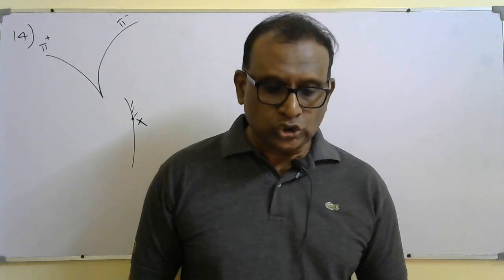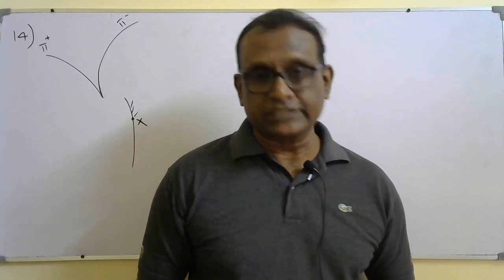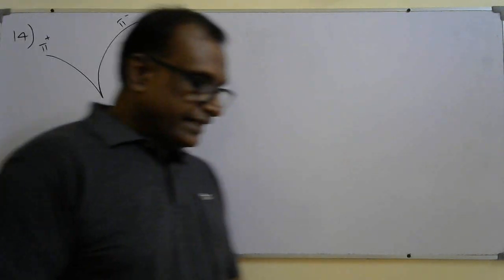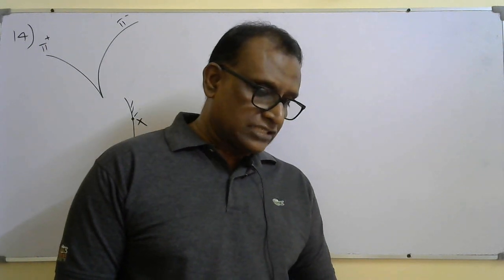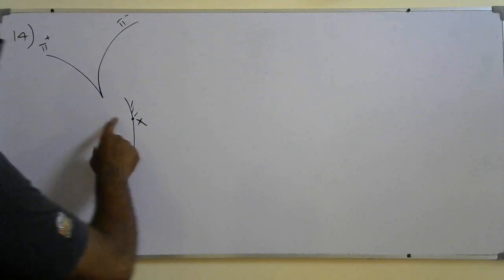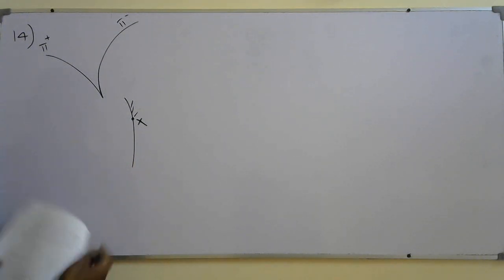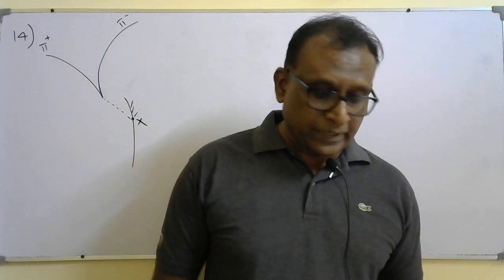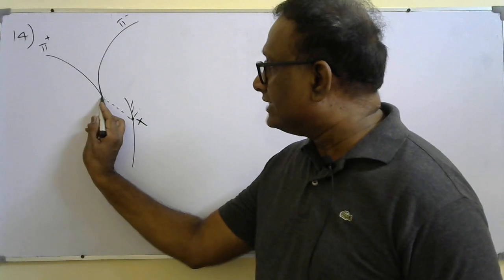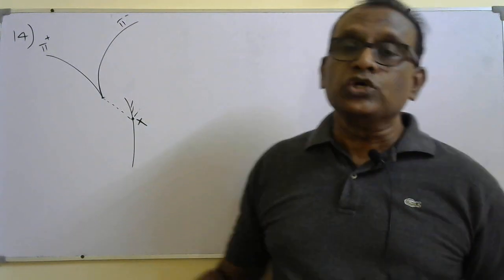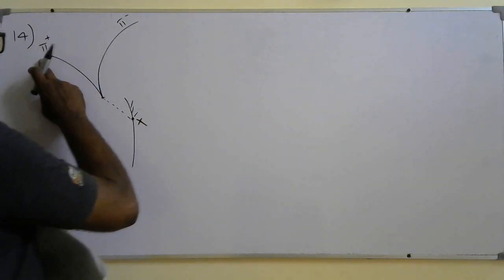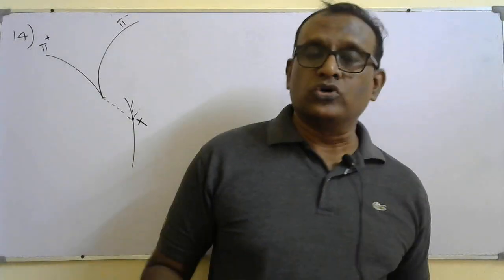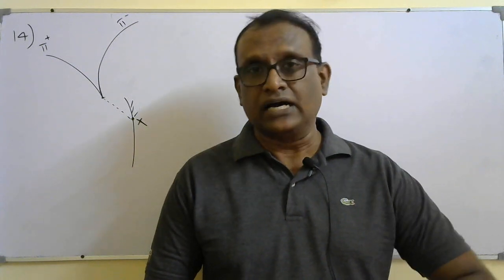Part B: state two ways the diagram shows the kaon is neutral. First: neutral particles produce no track — the kaon leaves no track between X and its decay point. Second: charge must be conserved in the decay — the kaon decays into pi-plus and pi-minus, with total charge +1 + (−1) = 0, confirming the kaon is neutral.